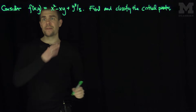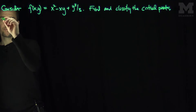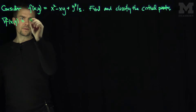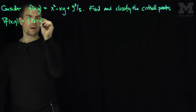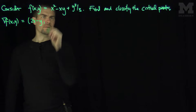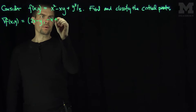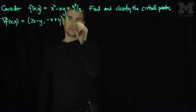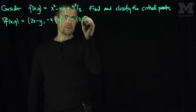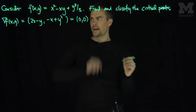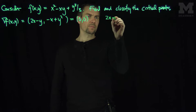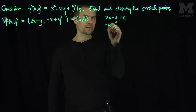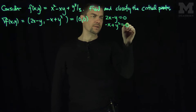To find the critical points, we compute the gradient of f. The gradient of f is (2x - y), and the y-derivative is (-x + y²). We set the gradient equal to zero, so each component must be zero: 2x - y = 0, and -x + y² = 0.